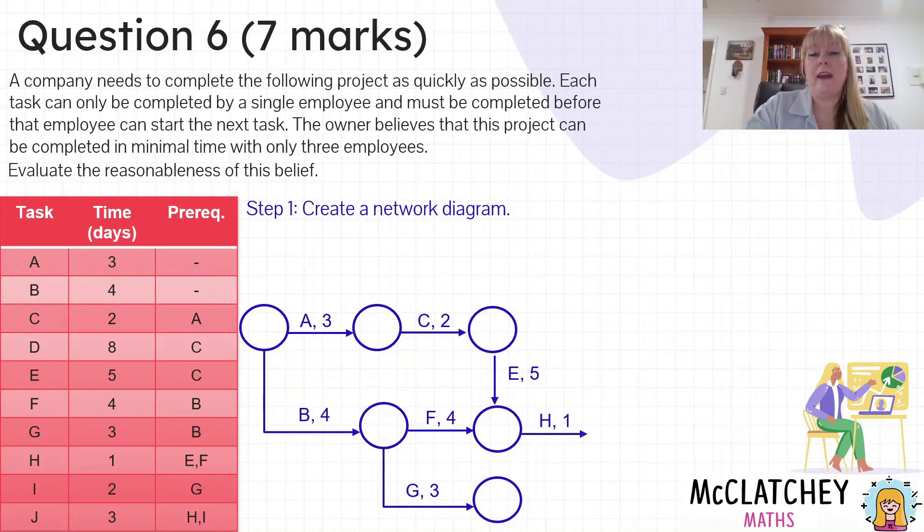Now coming out of activity E and F is activity H, and then we've got activity I coming out of activity G, and also coming out of activity C is activity D. It's a good idea as you're going to work out which ones haven't you included yet. I've got A, B, C, D, E, F, G, H, and I. So all that's left is J.